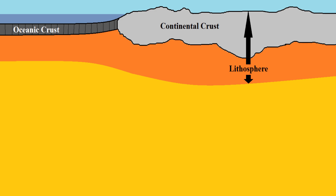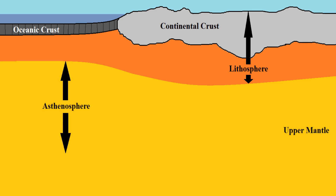Below the lithosphere is another part of the earth's mantle called the asthenosphere. The asthenosphere begins directly below the lithosphere, and it is also more hot and softer than the lithosphere. Where the asthenosphere and lithosphere meet is a very weak zone, and they are detached from one another, which allows the lithosphere to glide over the top of the asthenosphere.